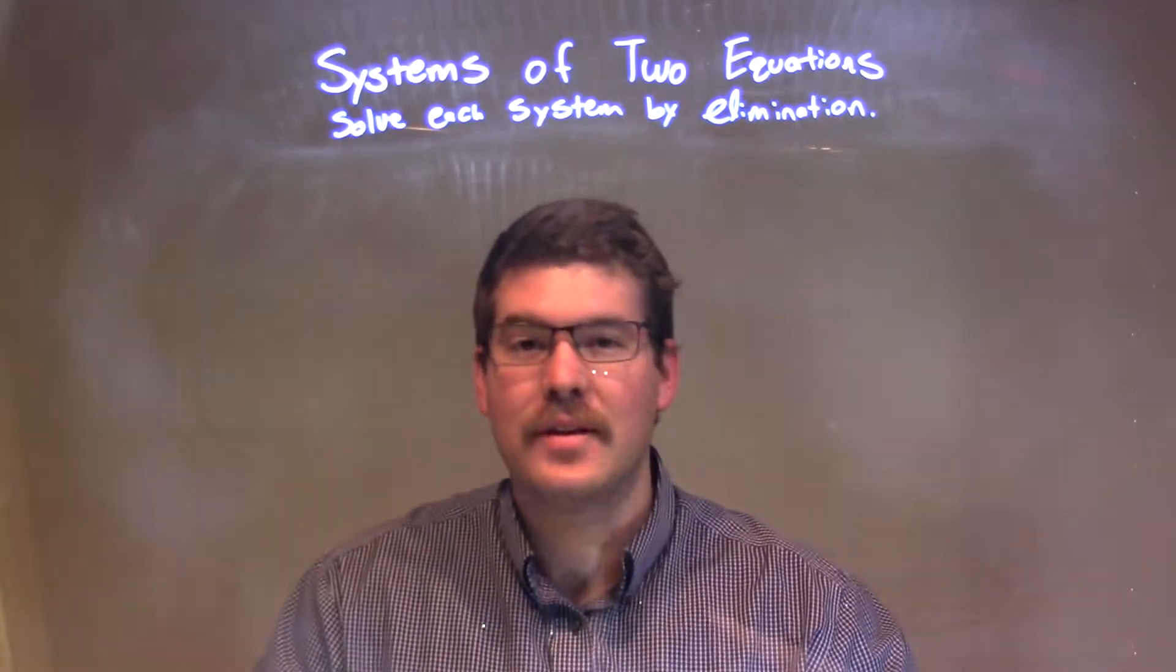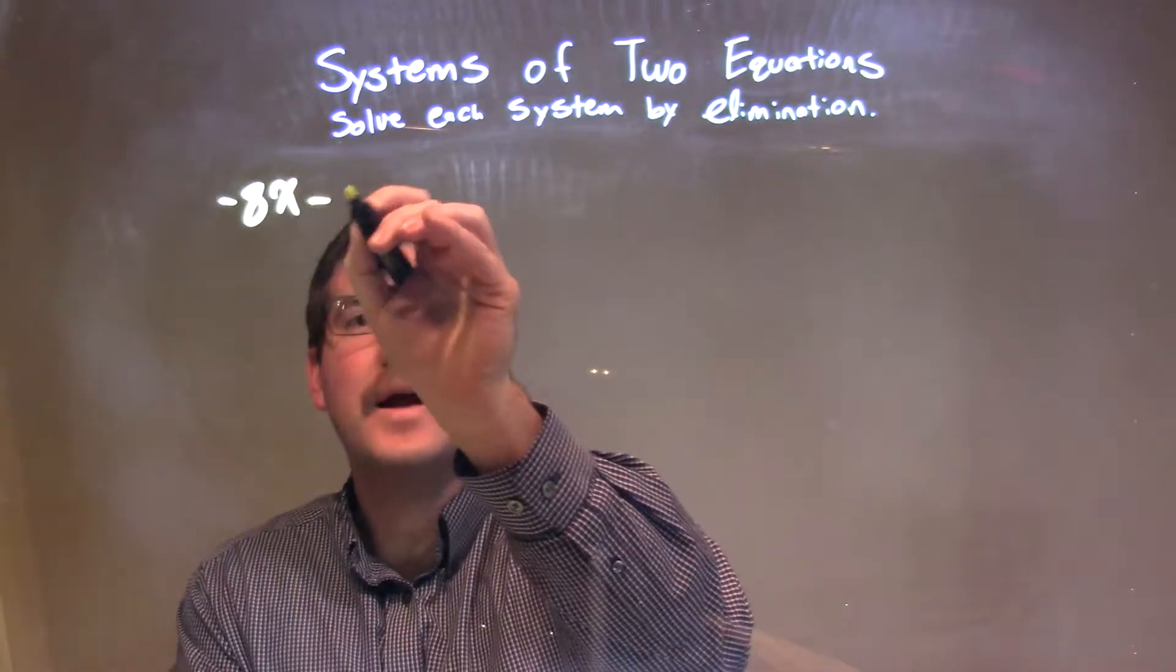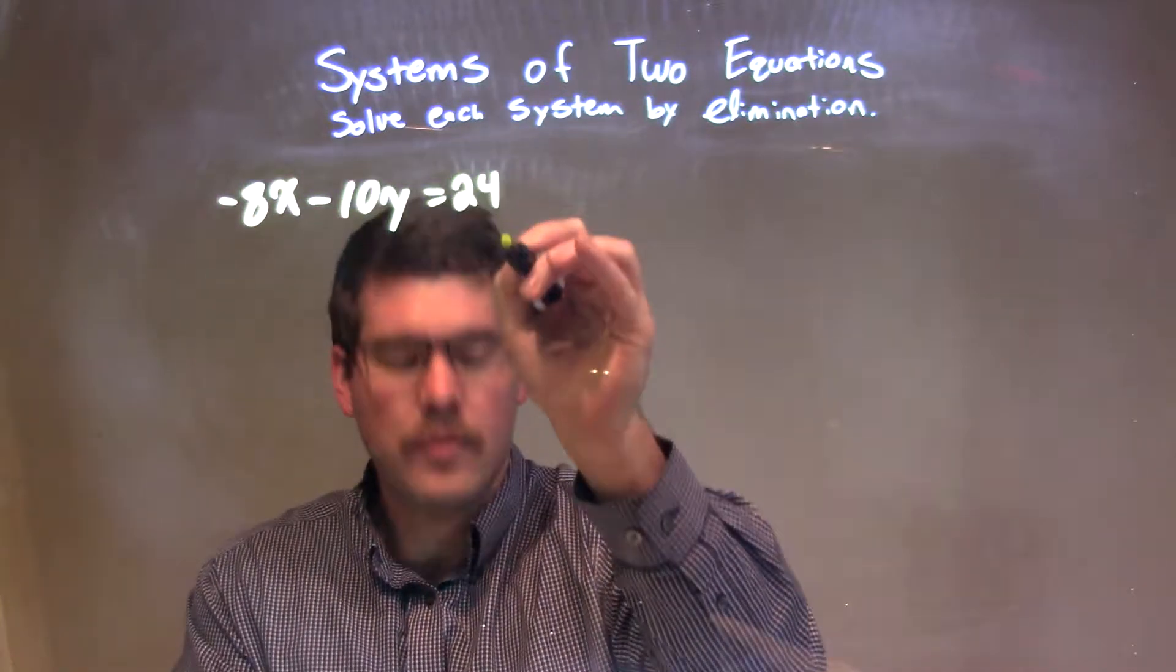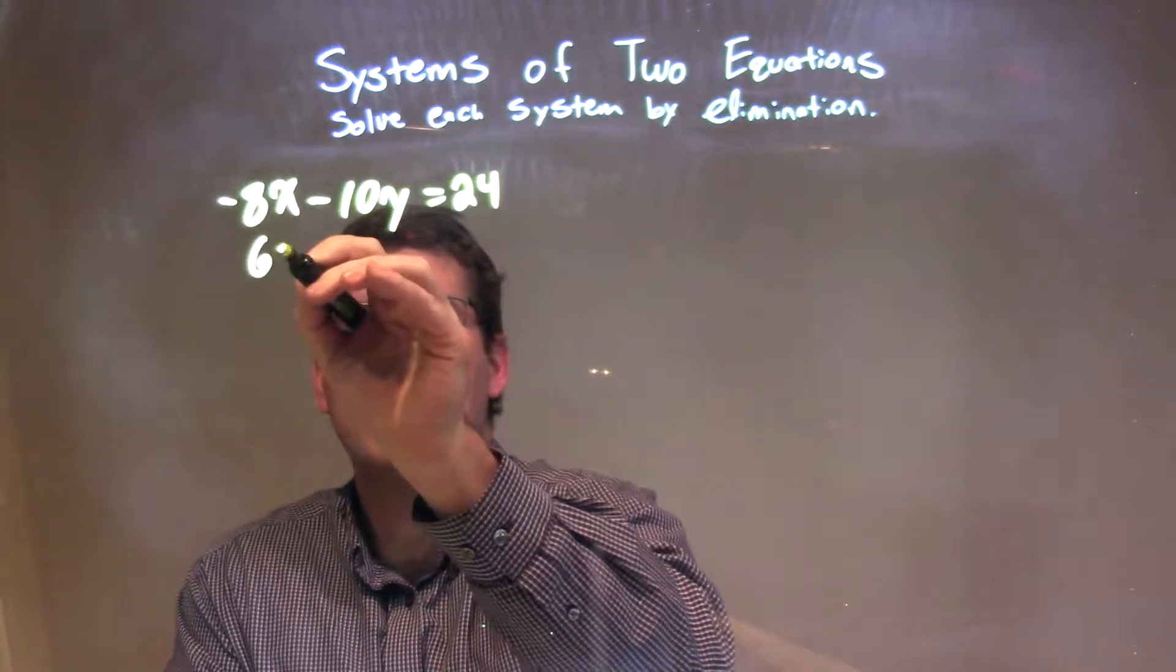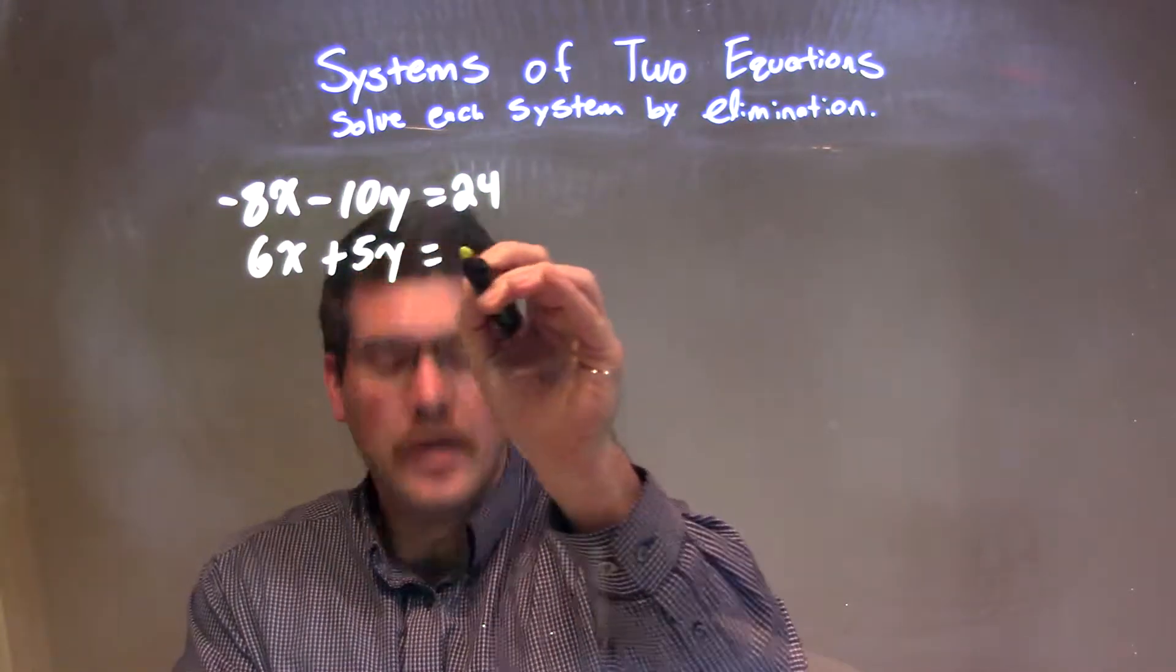I want to solve each system by elimination. So, if I was given this system: negative 8x minus 10y equals positive 24, and the second equation would be 6x plus 5y equals 2.